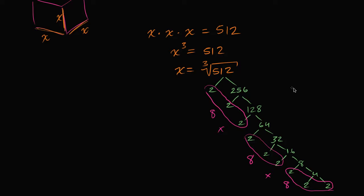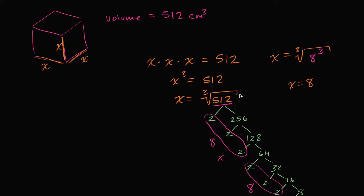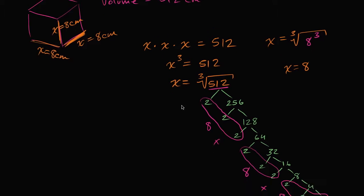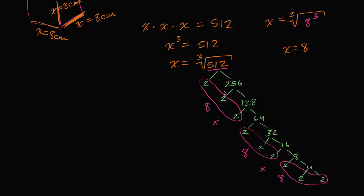So we could say that x is equal to the cube root of — instead of writing 512 — I could write 8 to the third power. The cube root of something to the third power is just that something. So x is going to be equal to 8. If the volume is 512 cubic centimeters, each dimension is going to be 8 centimeters. So x is equal to 8 centimeters. But if you didn't know offhand that 8 to the third power is 512, this is a reasonable way of coming to that conclusion. Hopefully that helped.